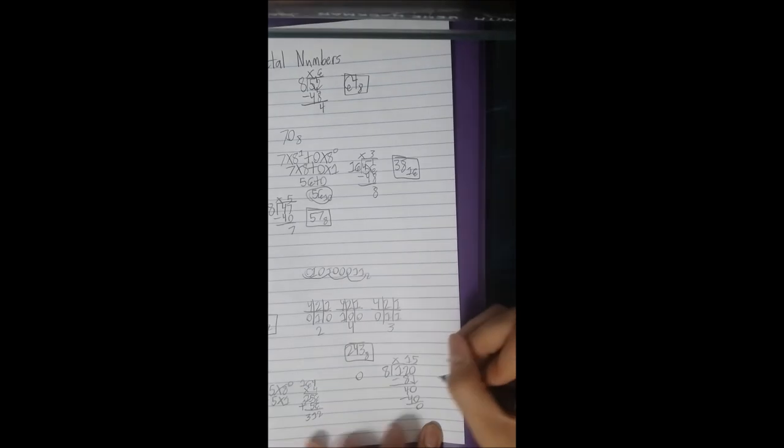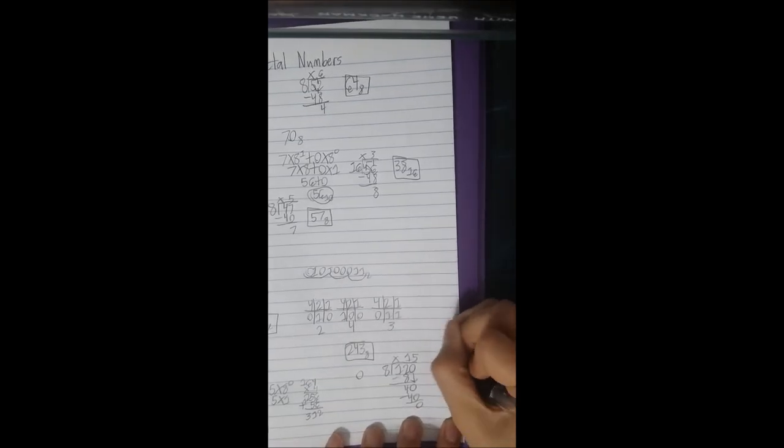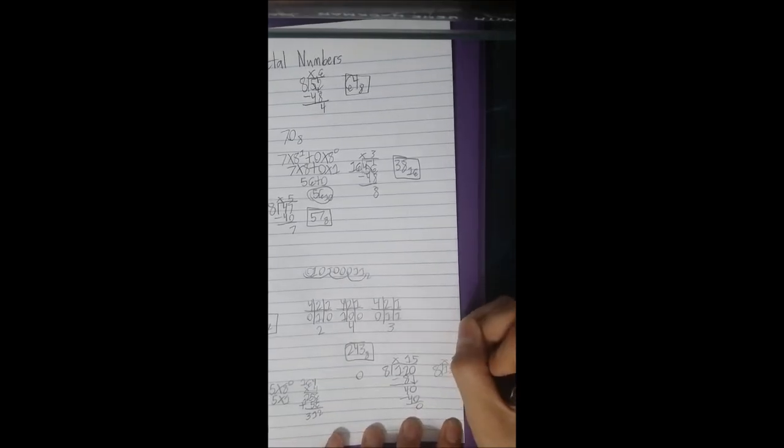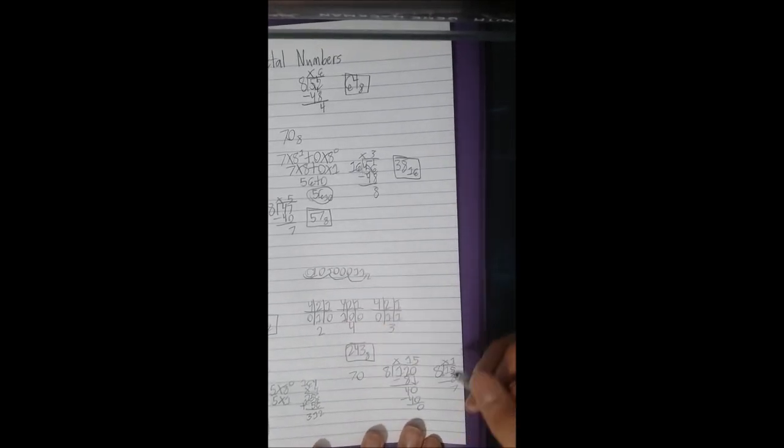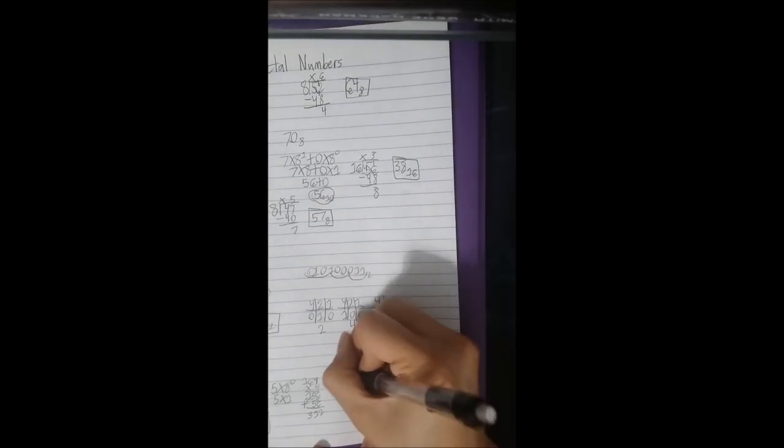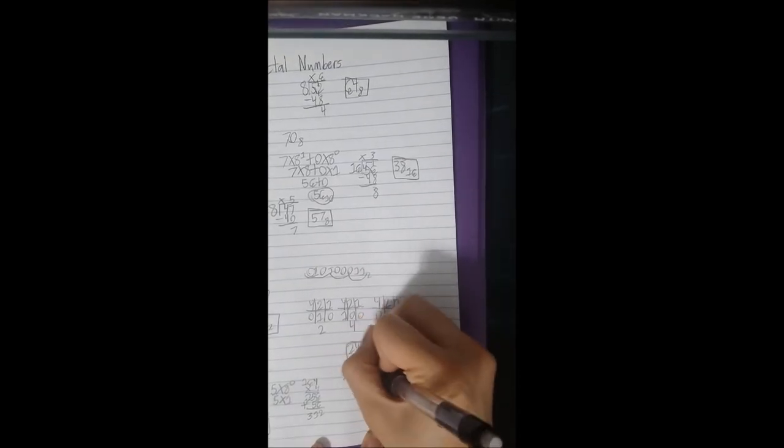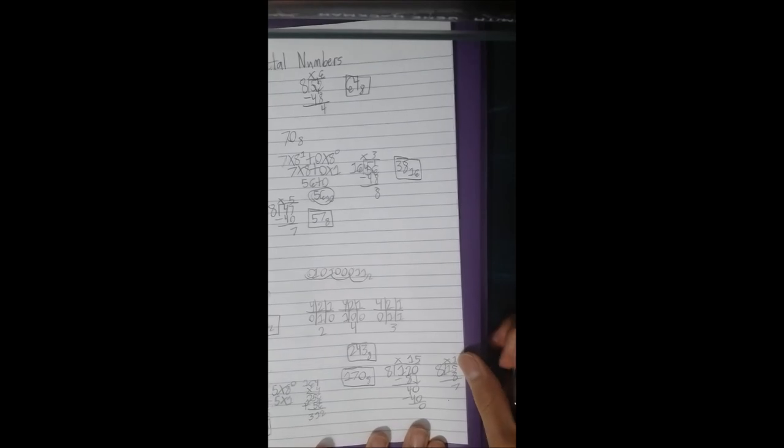So this is your last digit. Then 15 divided by 8. Then your remainder is first. Then your product last. And that's your octal number.